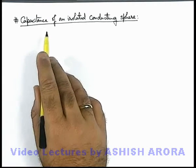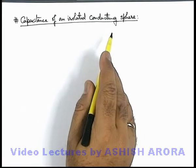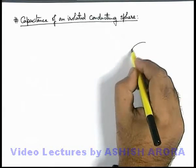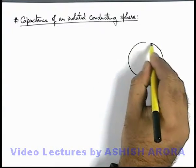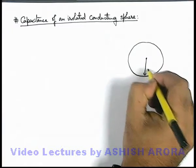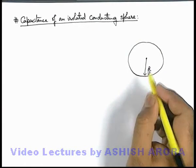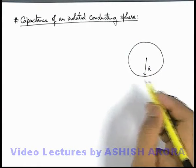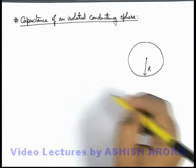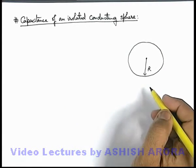Let us discuss the capacitance of an isolated conducting sphere. Say we are given a metal sphere of radius r. It is isolated in the surrounding, meaning there is no other charge or material present.